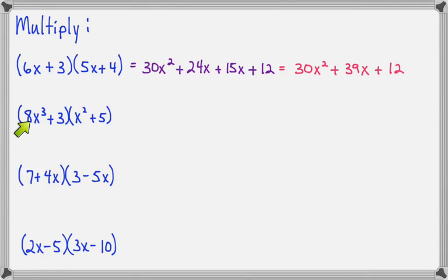On our second example, we have 8X to the third times X to the second. So that will make 8X to the fifth. Outer times outer will be 8X to the third times 5, which is 40X to the third. Inner times inner will be 3 times X squared, which is 3X squared. And last times last is 3 times 5, which is 15.